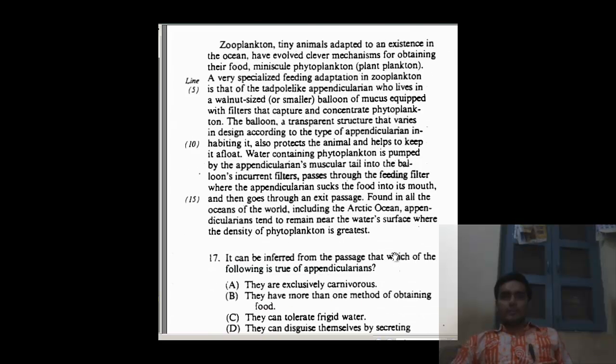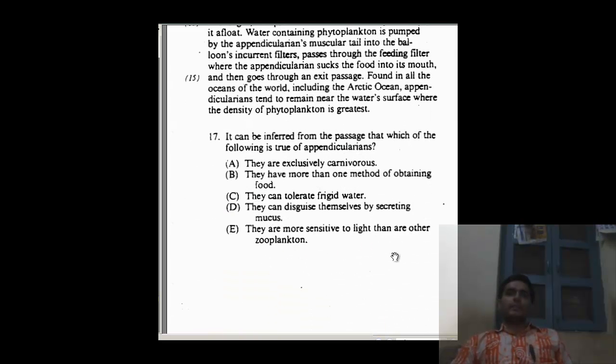Let us try to look at the first question. It can be inferred from the passage that which of the following is true about appendicularians: they are exclusively carnivorous or they eat plants. How can we say? So A goes out. Let's look at B, there are more than one method of obtaining food. Let us keep this for a while.